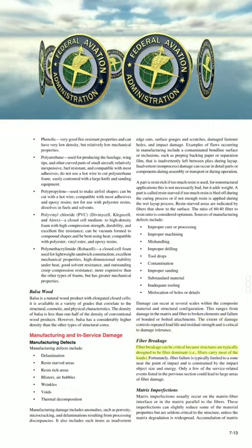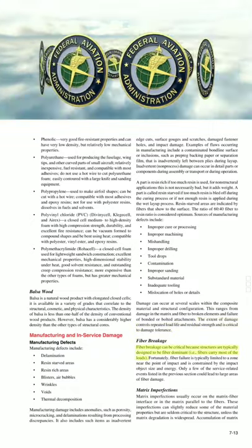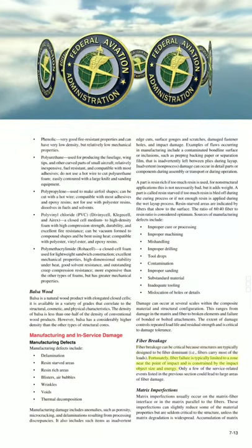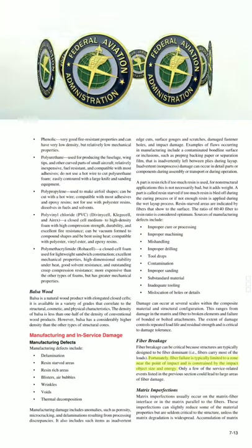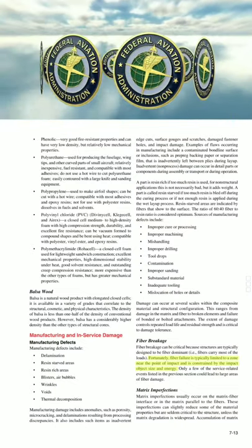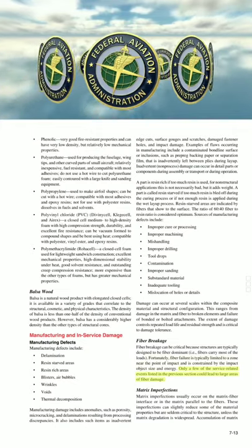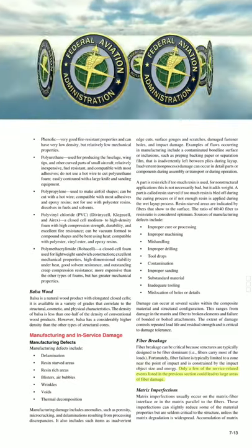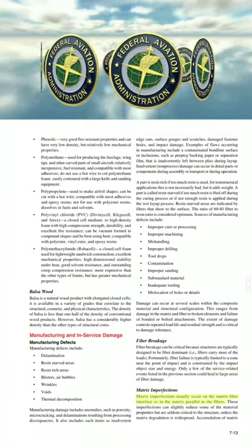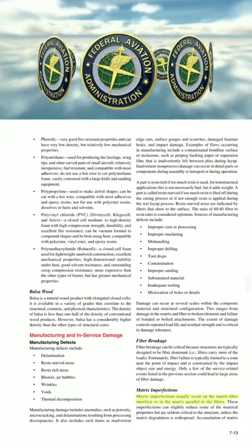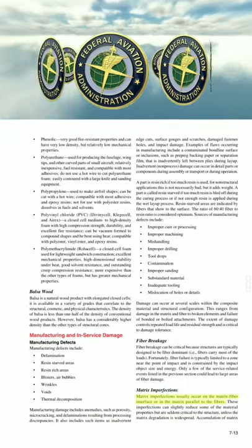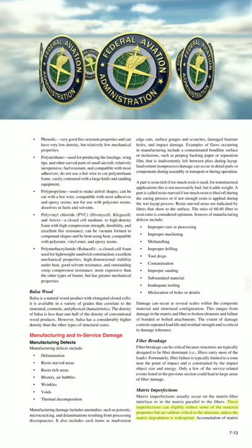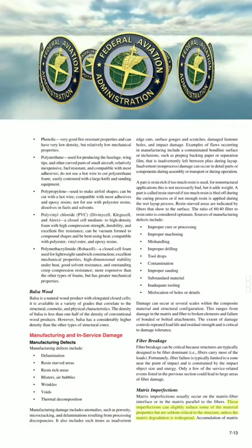Fiber breakage can be critical because structures are typically designed to be fiber-dominant — fibers carry most of the loads. Fortunately, fiber failure is typically limited to a zone near the point of impact, constrained by the impact object size and energy. Only a few service-related events could lead to large areas of fiber damage. Matrix imperfections usually occur on the matrix-fiber interface or in the matrix parallel to the fibers. These imperfections can slightly reduce some material properties, but are seldom critical to the structure unless the matrix degradation is widespread.